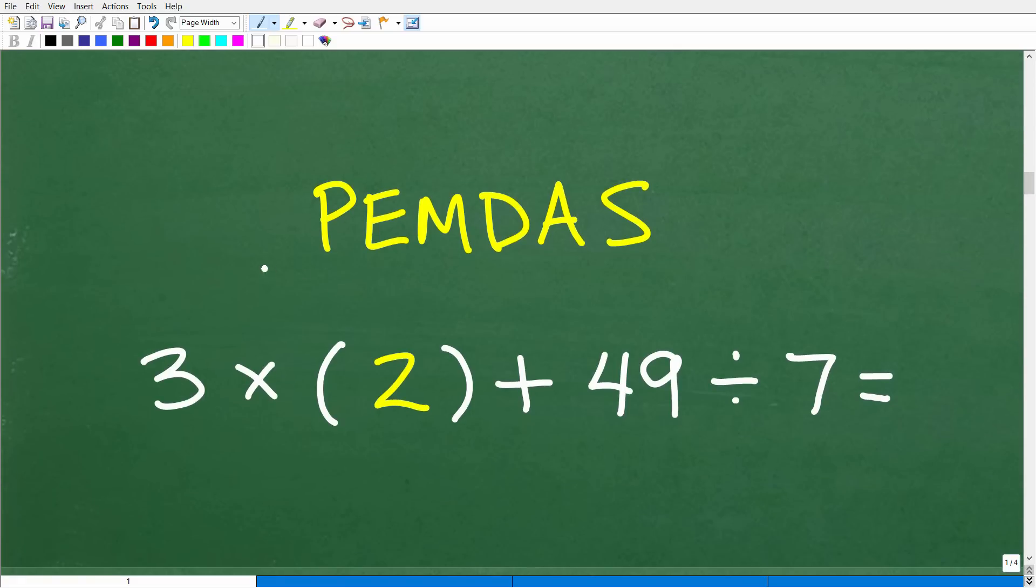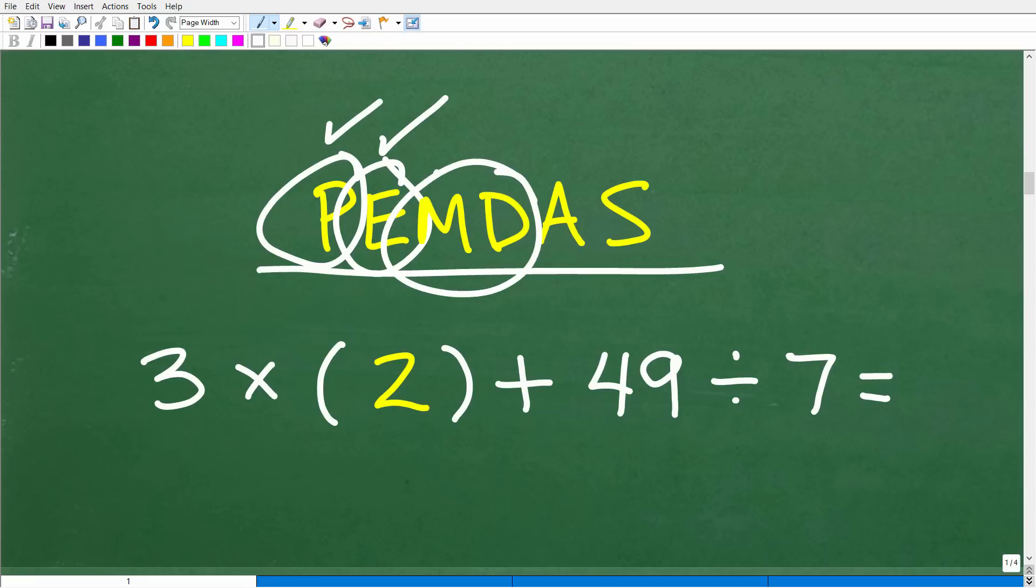So after we take that step, we just continue to evaluate our PEMDAS. So are there any more parentheses? Well, we have parentheses here, but there's nothing more to do. There's just a number. So technically, you can even drop the parentheses. So this step is done. Now, are there any powers or exponents? No, so that's done. Do we have multiplication and division? Indeed, we do.